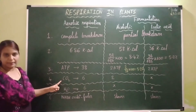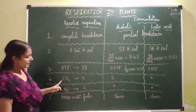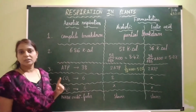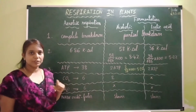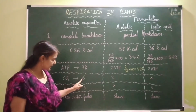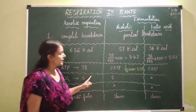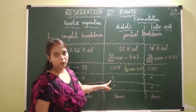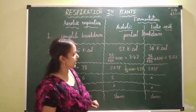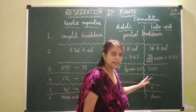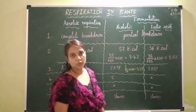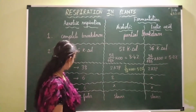Coming to carbon dioxide release: when one molecule of glucose undergoes breakdown through aerobic respiration, 6 molecules of carbon dioxide are released. In alcoholic fermentation, 2 molecules of carbon dioxide are released, and in lactic acid fermentation there is no release of carbon dioxide.